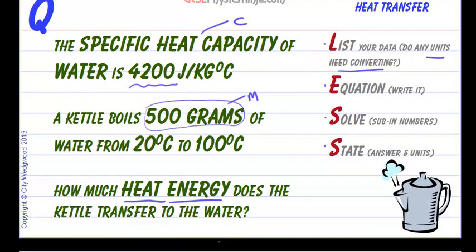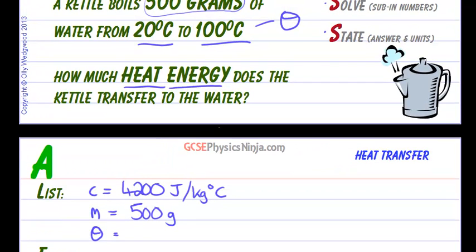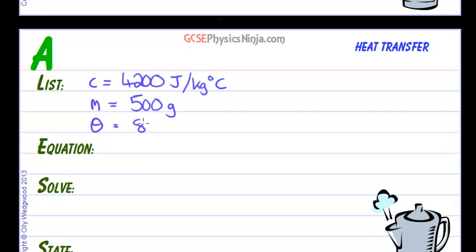What else do we know? We know that the temperature rises from 20 degrees to 100 degrees. So that's going to give us the temperature change, and that's sometimes called theta. So let's write that down. Theta equals, well that's 80 degrees, isn't it? 80 degrees temperature rise. So plus 80 degrees.